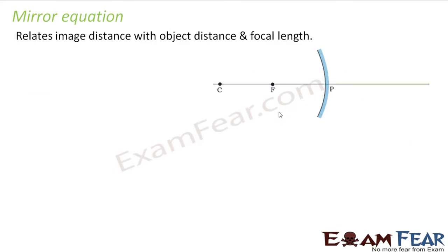So now let us talk about the mirror equation. It is an equation which relates the image distance, object distance, and focal length. The image distance is the distance from the pole where the image is formed, the object distance is the distance from the pole where the object is situated, and the focal length is the distance of the principal focus from the pole. All distances are measured from the pole of the spherical mirror.